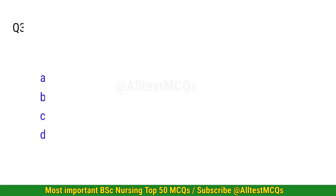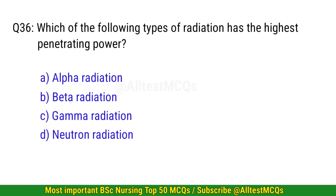Question 36. Which of the following types of radiation has the highest penetrating power? The correct option is C: Gamma radiation.